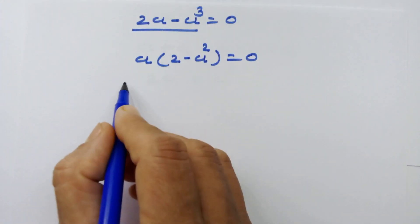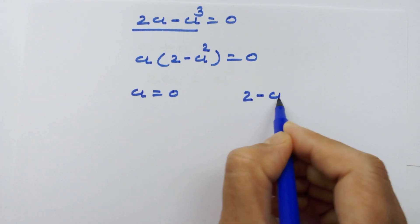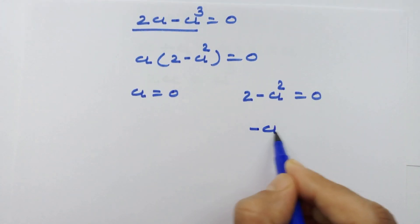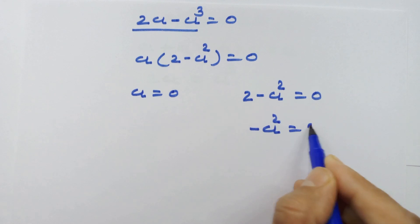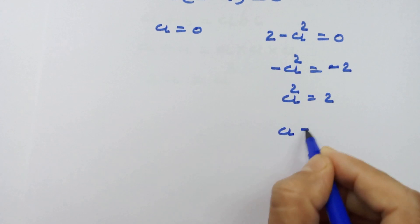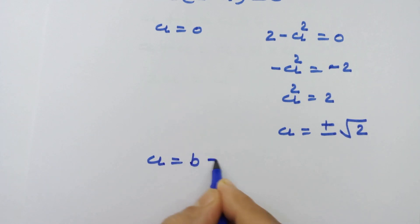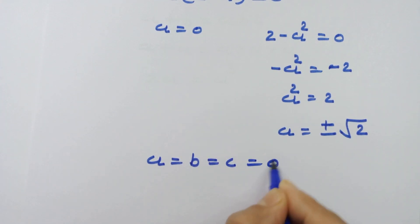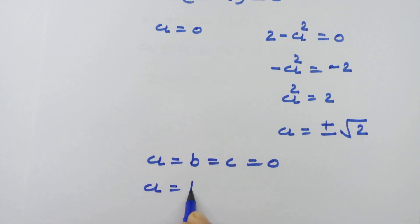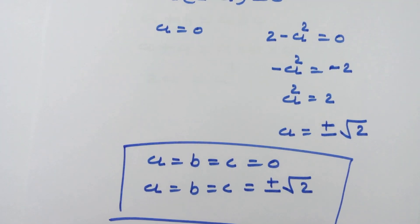We have two possibilities: A equals 0, and 2 minus A squared equals 0, which gives A squared equals 2, so A equals plus or minus root 2. Therefore, A equals B equals C equals 0, and also A equals B equals C equals plus or minus root 2. These are our answers. Thanks for watching and see you in the next one, bye bye.